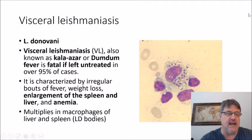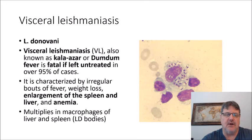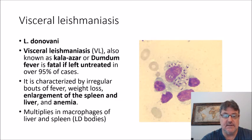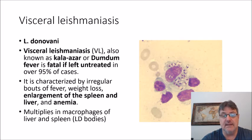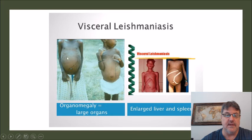Visceral leishmaniasis is caused by Leishmania donovani, also known as kala-azar — a name given because of the graying of the bodies of patients who had it. It's also been called dum-dum fever. If left untreated, it's fatal in at least 95% of cases. It's characterized by irregular bouts of fever, weight loss, enlargement of the spleen and liver, and anemia. It multiplies within the macrophages of the liver and spleen — those are the Leishman-Donovan bodies, or LD bodies. Here are pictures of patients with the enlarged organs — they have big bellies.